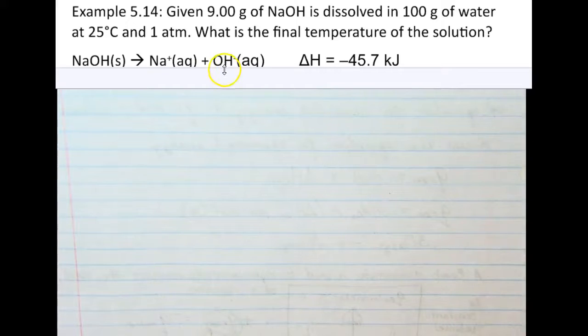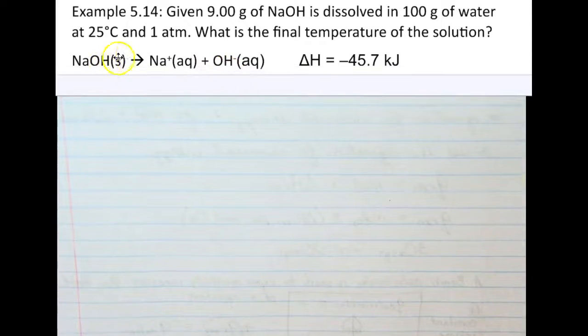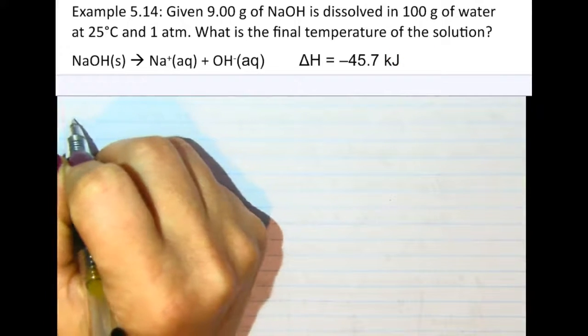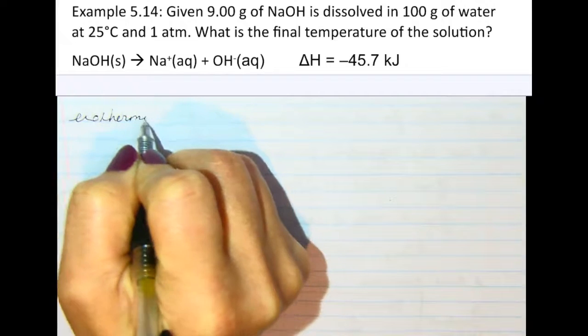And so what we'll notice is we've been given the dissolution of sodium hydroxide. So once you put it in water, it breaks into its cations and anions. And this process has a delta H that's negative 45.7 kilojoules. So the first thing we have to recognize is that this is an exothermic process.